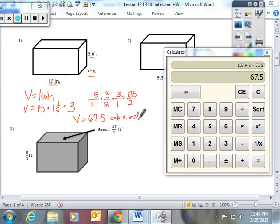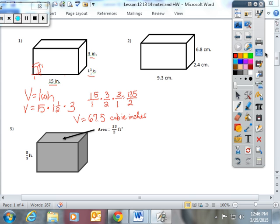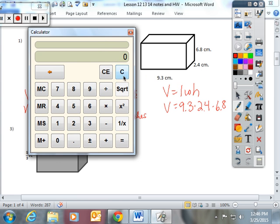Because what you're really trying to figure out is how many one inch by one inch by one inch cubes fit into this rectangular prism. So let's do the next one together. I'm going to look and see what I have. I have a length, I have a width, I have a height. So I'm going to use this formula. Nine point three times two point four times six point eight. Now I'm going to use my calculator to try to figure out the volume.